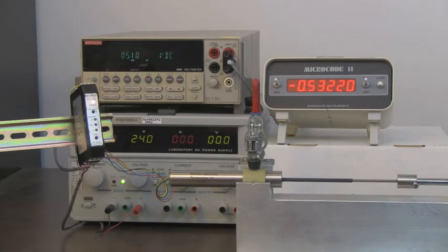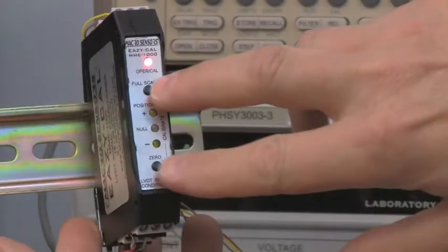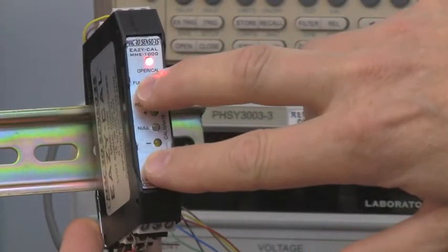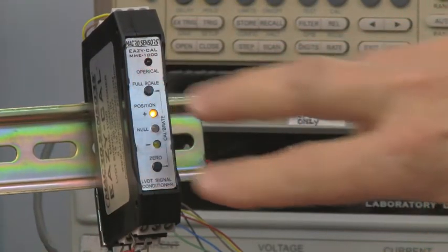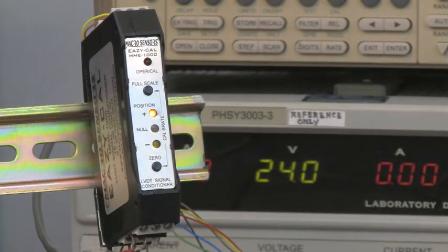This is accomplished by simultaneously depressing and holding the zero and full scale buttons for three seconds or until the red OpCal LED indicator lamp starts to blink, signifying that the calibration mode has been entered.